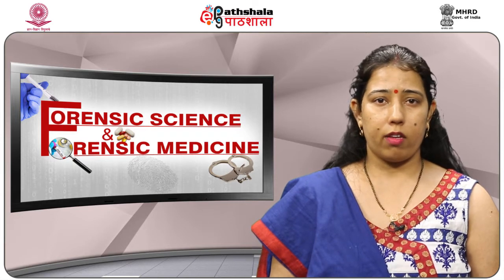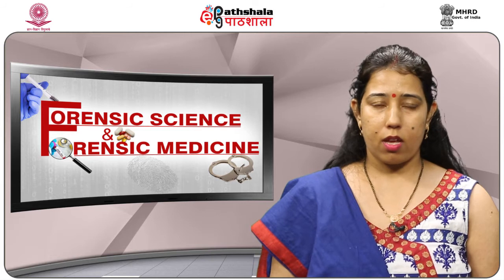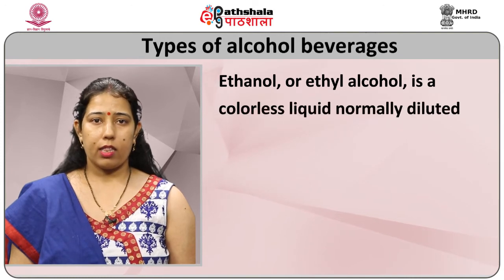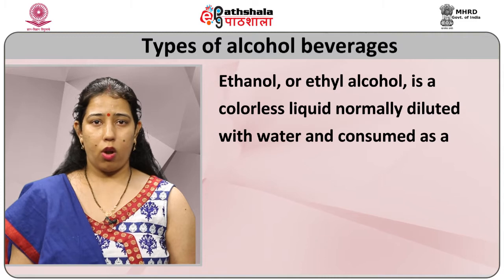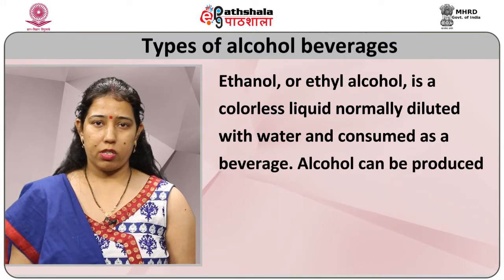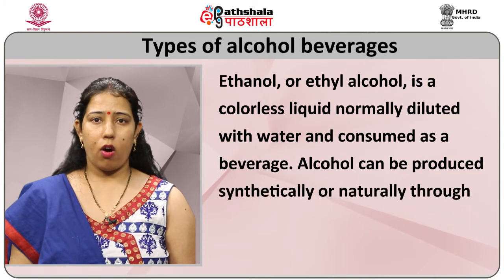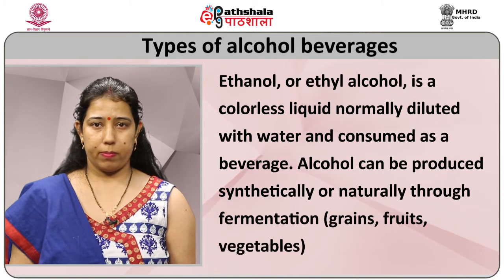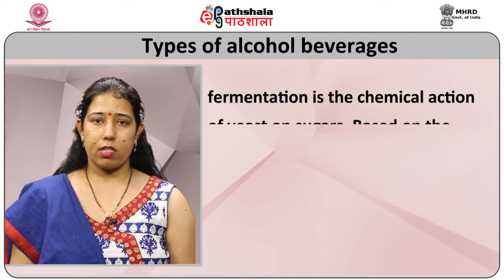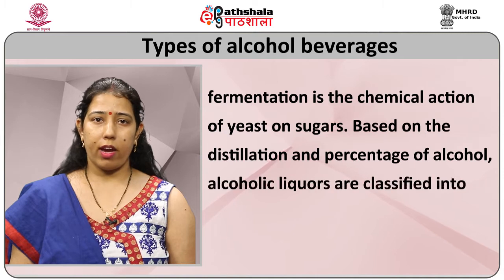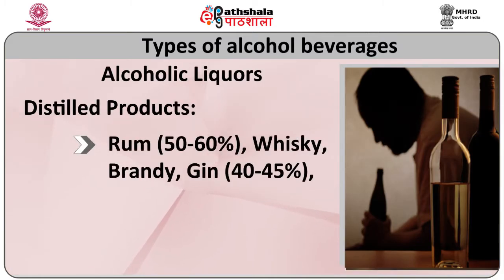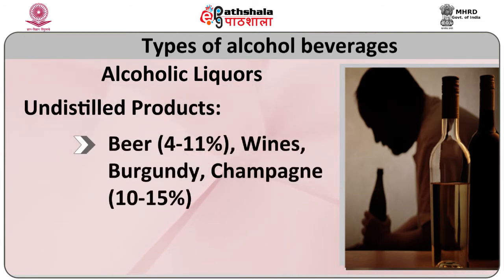The most common type of alcoholic beverage is ethanol or ethyl alcohol — a colourless liquid normally diluted with water and consumed as a beverage. Alcohol is produced synthetically or naturally through fermentation of grains, fruits, and vegetables. Based on distillation and percentage of alcohol, alcoholic liquors are classified into distilled and undistilled. Distilled products include rum, whisky, brandy, and gin; undistilled products include beer, wines, burgundy, and champagne.